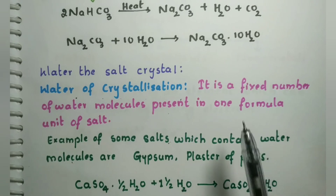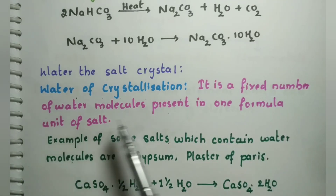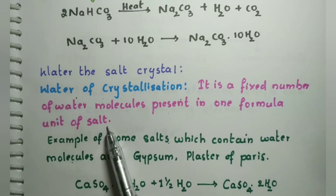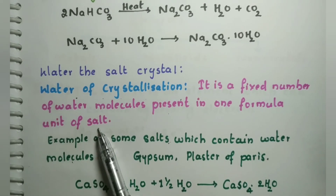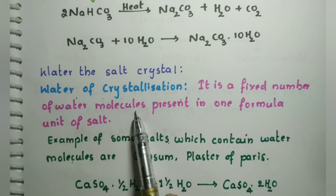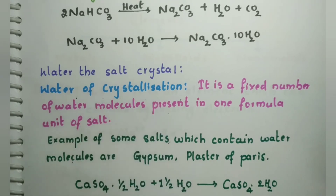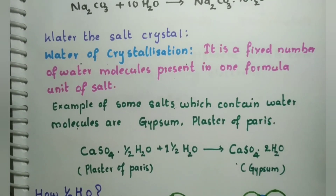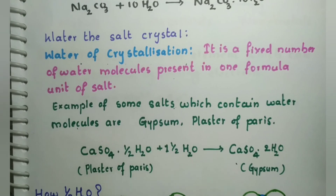Water of crystallization is defined as the fixed number of water molecules present in one formula unit of salt. Some salts that contain water of crystallization are gypsum, plaster of Paris, and copper sulfate.